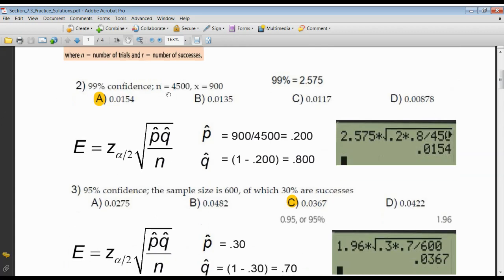Number two, same idea here. He doesn't tell us P hat. So to calculate P hat, it's X over N. X, remember, X and R are synonymous. So it's 900 over 4,500. You're finding the proportion of the sample. P hat, sample proportion, 0.200. Q hat is 1 minus that.